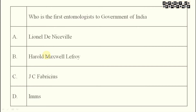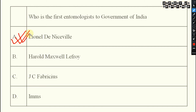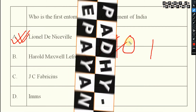Next question: who is the first entomologist to the Government of India? We have discussed in a previous video who is the first, who is the imperial one, who is the second imperial one, and the relevant years. The answer is Leonald de Niceville. He was appointed as the first entomologist to the Government of India in 1901 — note this year, as it is important.